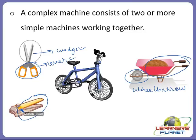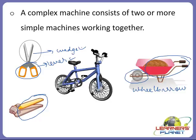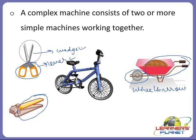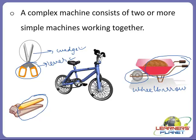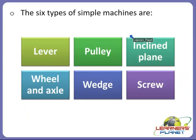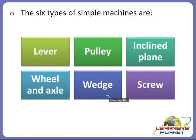So a machine is a tool that makes our work easier by helping us overcome a larger force by applying lesser force. They can be simple or complex. Here we will discuss only simple machines, which are of the following six types: lever, pulley, inclined plane, wheel and axle, wedge, and screw. In this session we will discuss about the lever only.